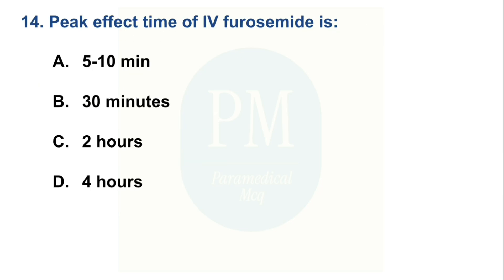The peak effect time of IV furosemide is: Option A: 5 to 10 minutes, Option B: 30 minutes, Option C: 2 hours, Option D: 4 hours. The correct option is Option B, 30 minutes.